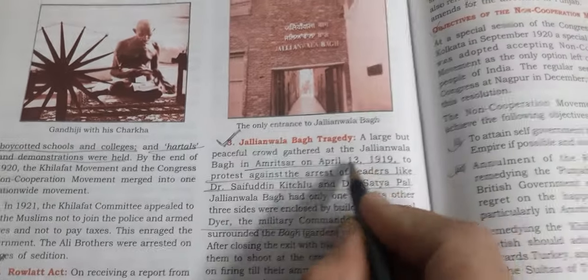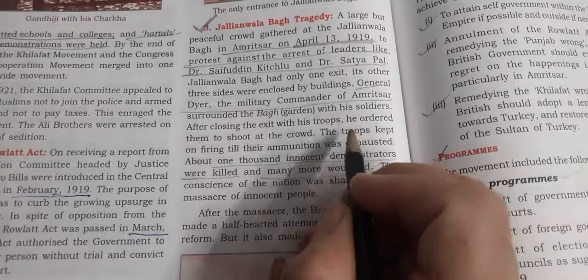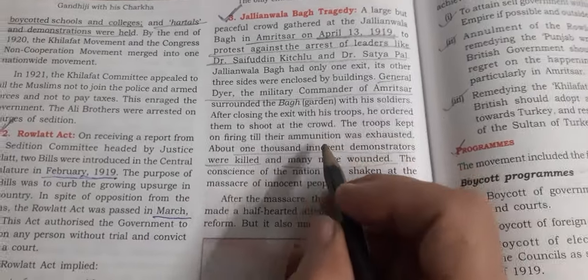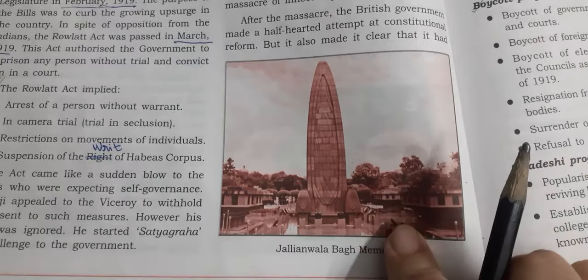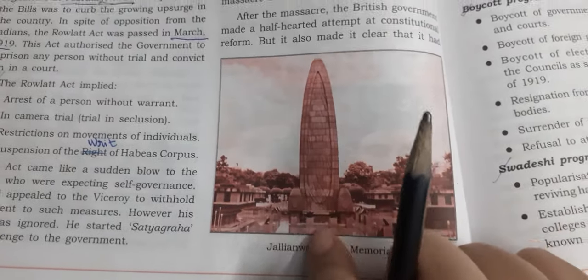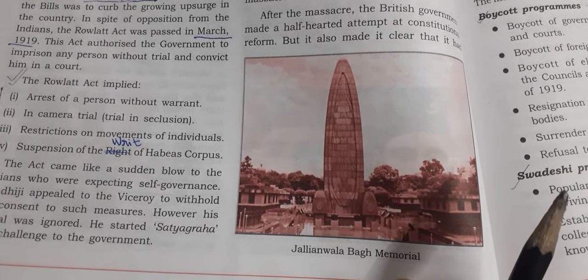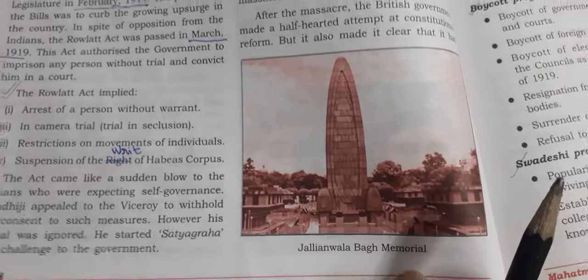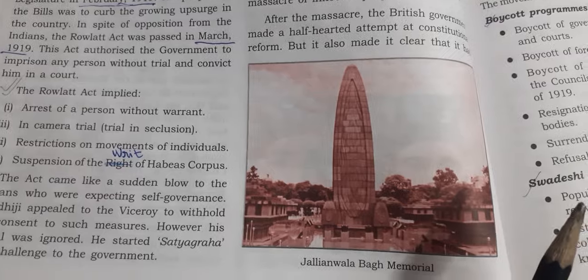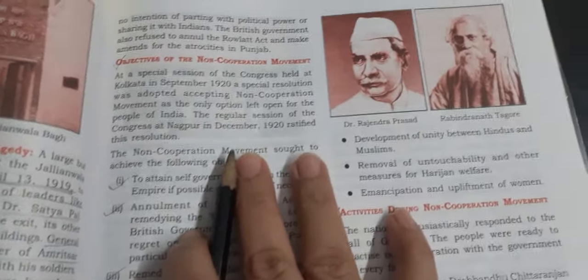The third reason for the Non-Cooperation Movement was the Jallianwala Bagh tragedy, which is in the syllabus. The date was April 13, 1919. Know the two leaders who were arrested, and the commander of Amritsar — General Dyer — who conducted the massacre. Very importantly, be able to recognize the picture of the Jallianwala Bagh memorial, as it is a common structure asked in exams and easy to miss if you haven't paid attention.